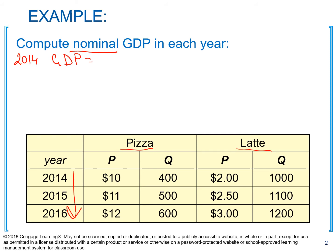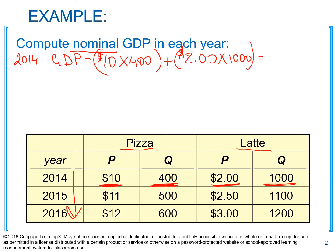To calculate nominal GDP, we take the current year's price and multiply it by the current quantity. For year 2014, the price of pizza was $10 and we produced 400 of them. The price of latte was $2 and we produced 1,000 of them. So our nominal GDP for year 2014 is $6,000.